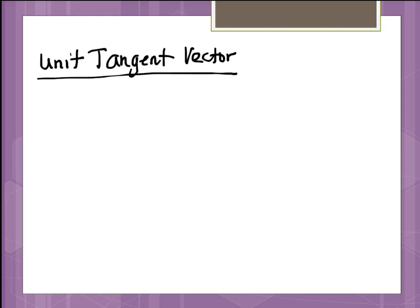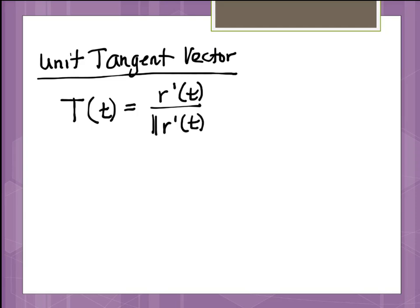Your book is going to call this capital T of the variable — not my favorite notation. What we're going to do is: when we find a vector that's the derivative, that's our tangent vector. To make it a unit vector, we divide it by the length of that particular vector. A unit tangent vector is the position vector's derivative divided by the magnitude at that point.